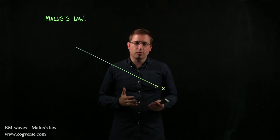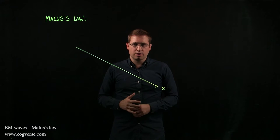For a given polarizer, Malus's law relates the intensity of the emerging light to the intensity of the incoming light. And there are two situations that you need to know.